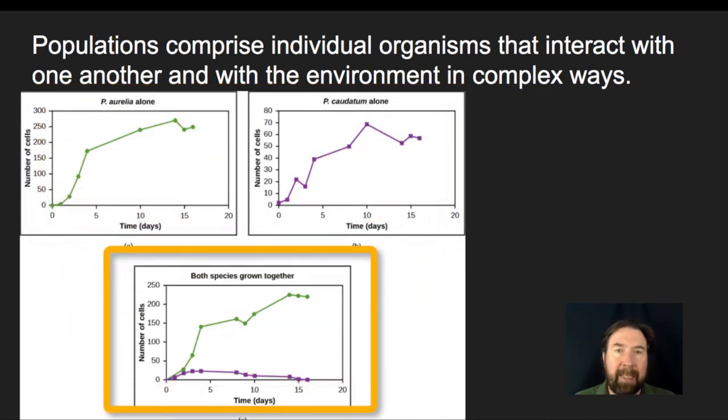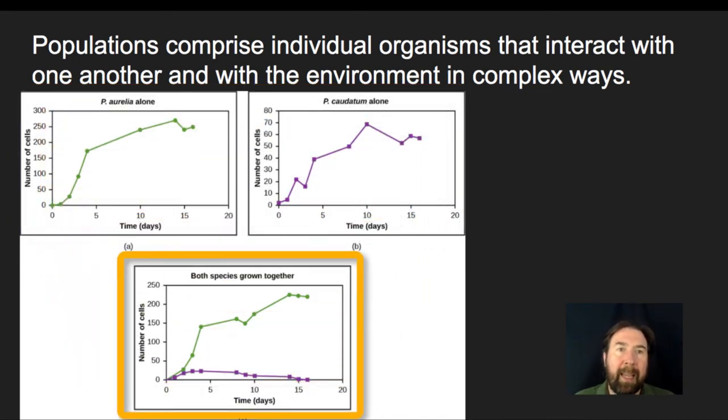However, if I put both species in the same container, what we end up seeing is that the P. aurelia does just great. It has the ability to compete and get resources better than the P. caudatum. So paramecium caudatum is not very good at competing with the other paramecium species. This shows that not only do species compete with other members of their species for resources, which is why it's not completely exponential growth, it levels off relatively.